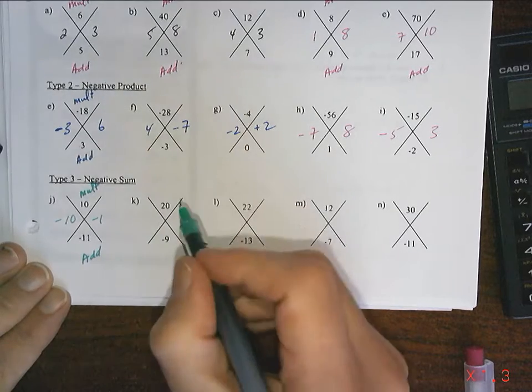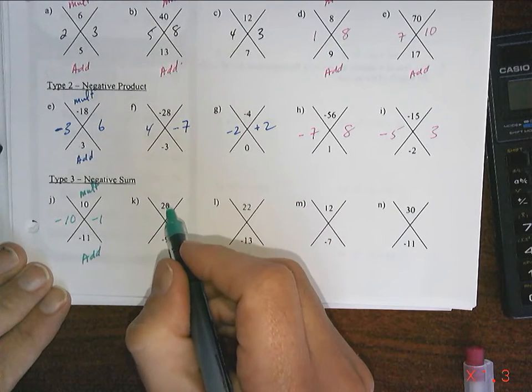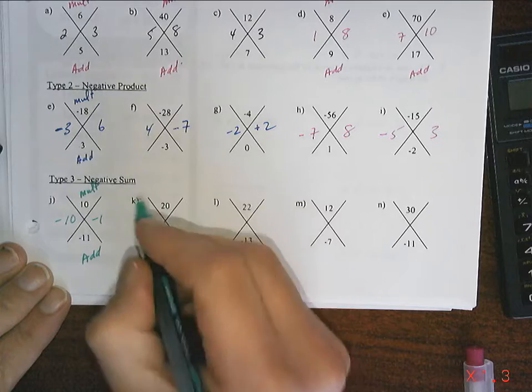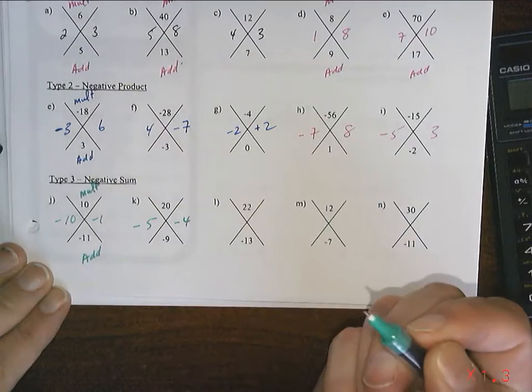20. Two numbers that multiply to give 20 is 5 and 4, I'm thinking. And they do add to give 9 as long as they are both negative.